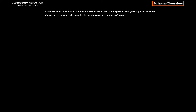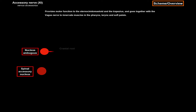This nerve has two main nuclei. Just like the glossopharyngeal and the vagus nerve, this nerve has motor fibers coming from the nucleus ambiguus, located in the medulla oblongata. And we have the spinal accessory nuclei. These are nuclei that lie in the spinal cord, in the six upper segments of the spinal cord, lateral to the anterior horn of the gray matter. The nucleus ambiguus gives rise to the cranial root of the accessory nerve, while the spinal accessory nucleus gives rise to the spinal root of the accessory nerve.